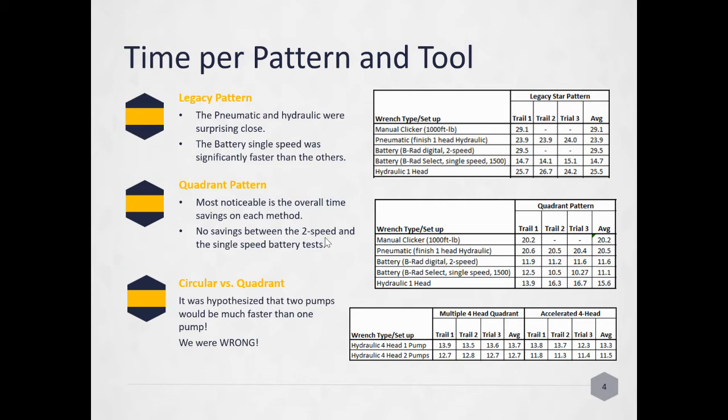You will save a ton of time with each method. The other thing we saw was the two speed and the single speed didn't really save us a whole bunch of time, not enough to make a difference. I like the single speeds because the two speed just adds to that annulus, you're adding length, adding things to fail. If you look at the clicker wrench, 20 minutes versus 29 minutes. You're saving 30% of your time, a third of your time.